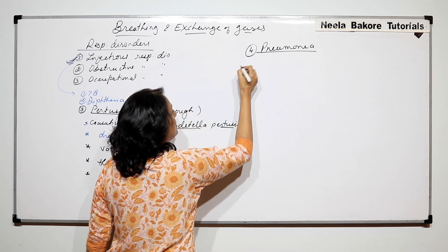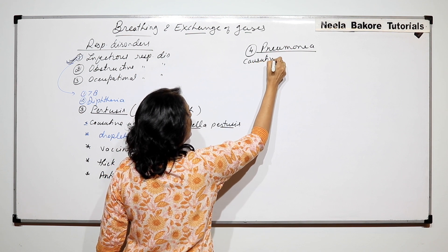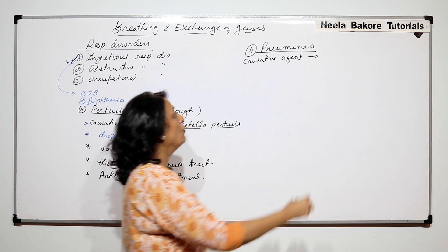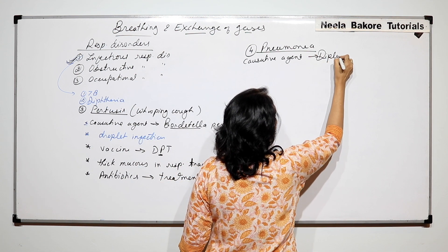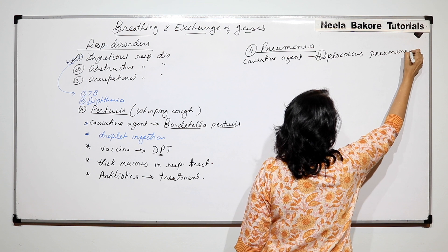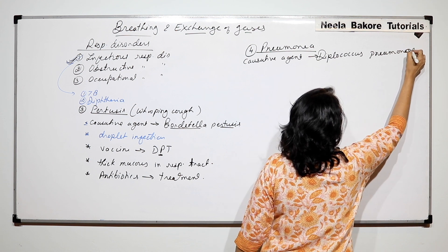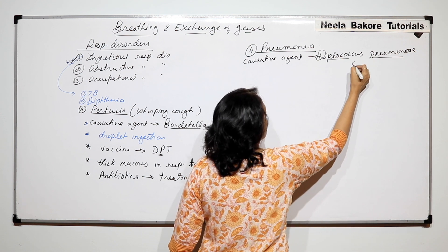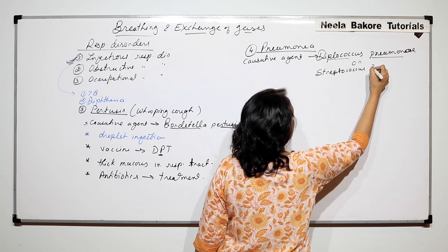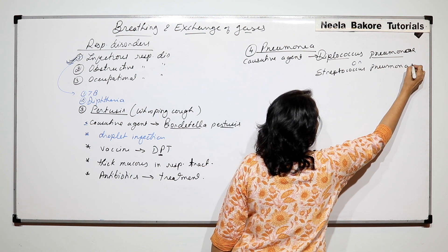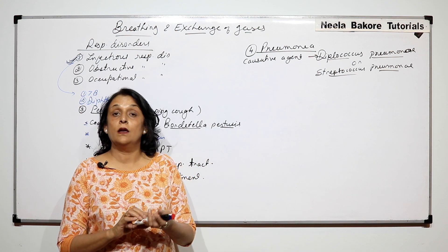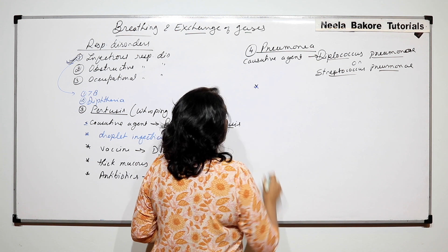Pneumonia: The causative agent has two names. One is Diplococcus pneumoniae, or it is also known as Streptococcus pneumoniae. We can say Diplococcus and Streptococcus pneumoniae.